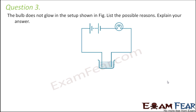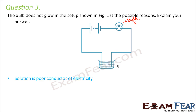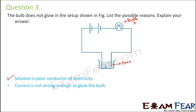Question number three: the bulb does not glow in the setup shown. List the possible reasons. Here we have a tester with a bulb that is not glowing. One option is that the solution is a poor conductor — in that case it will not conduct electricity, the circuit will not be completed, electric current will not flow through the bulb, and the bulb will not glow.